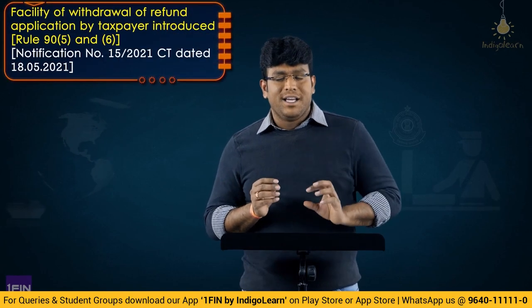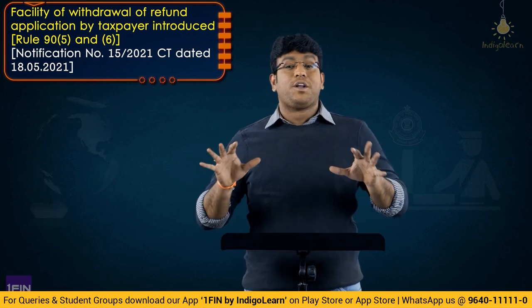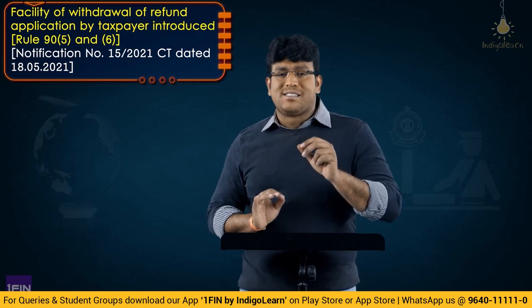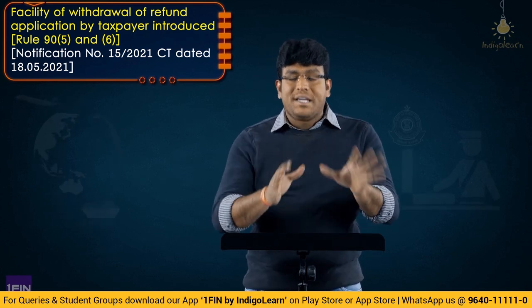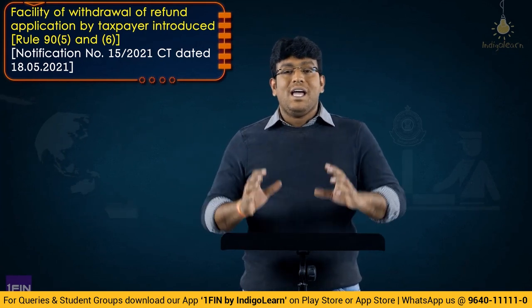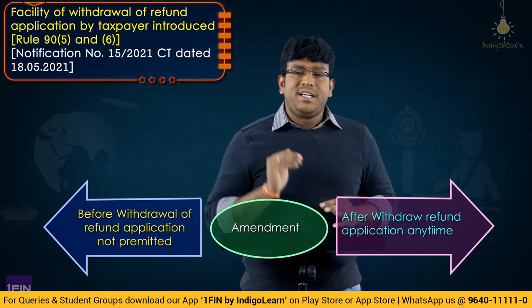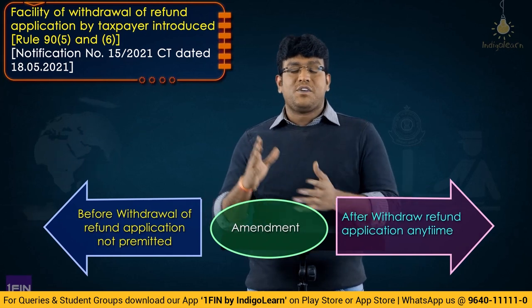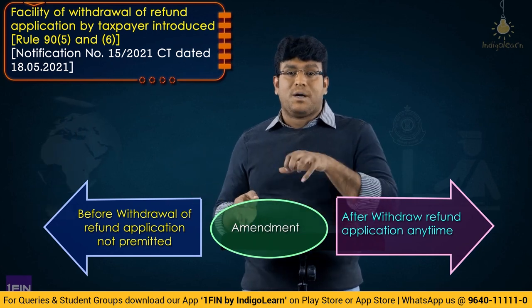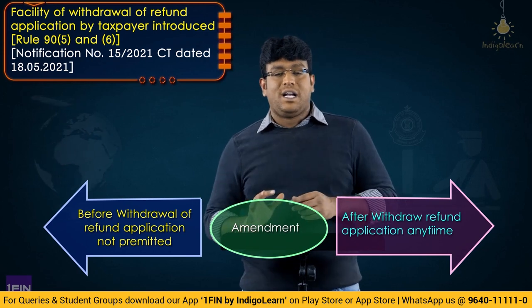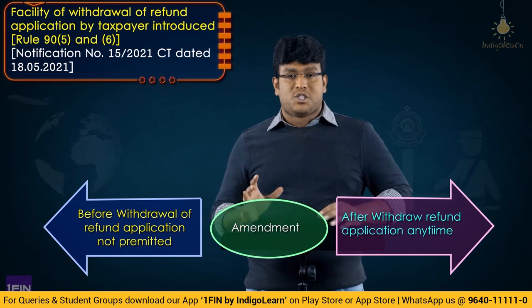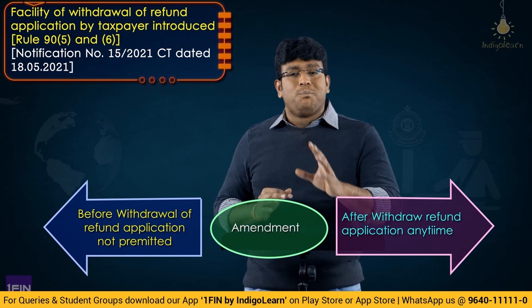The next amendment: by inserting Sub-rule 5 and Sub-rule 6 in Rule 90, they have specified that if any person has made an application for refund before the provisional order is passed, before refund is sanctioned, or before any show cause notice is issued, the applicant is given a facility to withdraw the refund application. Earlier, there was no facility to withdraw a refund application once filed unless a deficiency memo was issued. Now, if the applicant himself finds a mistake in the application, he can withdraw it.